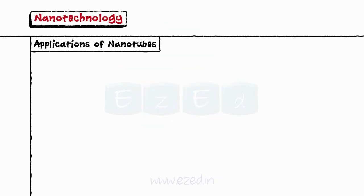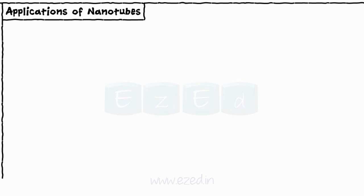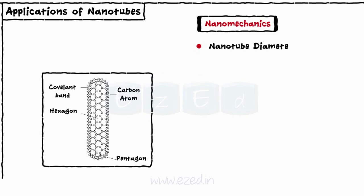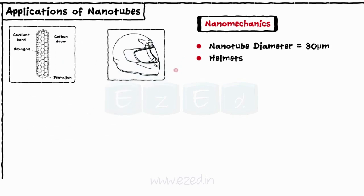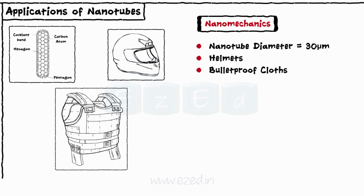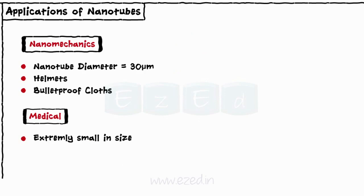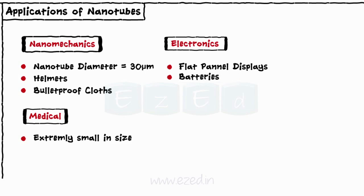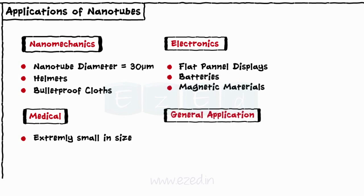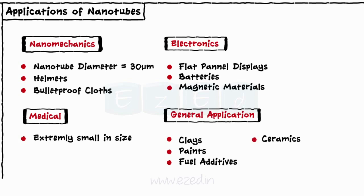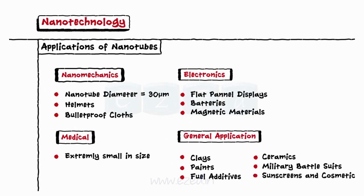Nanomaterials find very wide applications in all fields. In nanomechanics, nanotubes with 30 micrometer diameter are used to produce helmets, bulletproof clothes, etc. Nanotubes are also used in the medical field, as they are extremely small in size. The applications of nanotubes in electronics mainly include flat panel displays, batteries, magnetic materials, etc. In general, applications of nanotubes include clays, paints, fuel additives, ceramics, military battle suits, sunscreen and cosmetics.